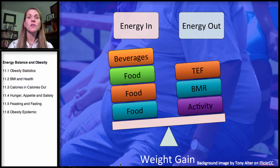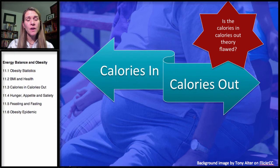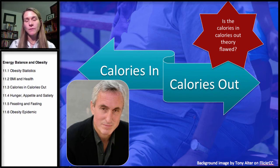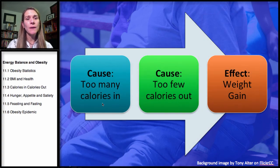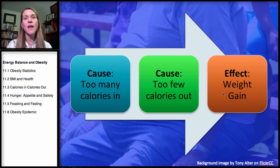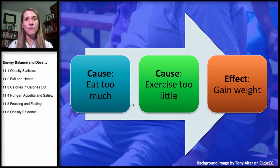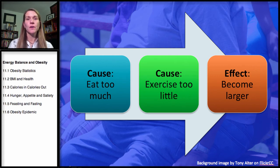This is the traditional way of looking at weight gain and loss. However, there are some flaws in this theory, based on work by Gary Taubes in Good Calories, Bad Calories and Why We Get Fat. The first law of thermodynamics is true — calories in should equal calories out — but the issue is cause and effect. Currently we think the cause is eating too many calories or burning too few, and the effect is weight gain.